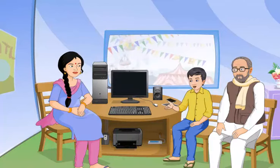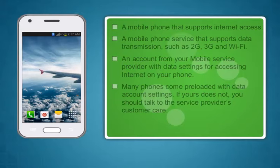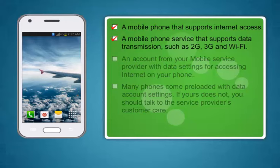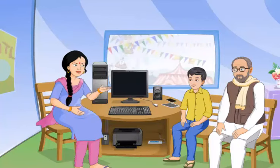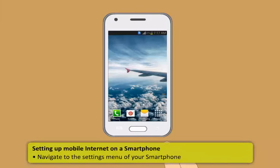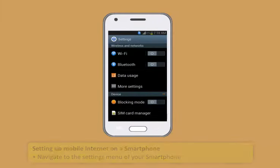You can also use the internet through your mobile phone. To access it, you need: a mobile phone that supports internet access, a mobile service that supports data transmission such as 2G, 3G, or Wi-Fi, and a data account from your service provider. To set up mobile internet on a smartphone: navigate to the Settings menu (via the settings icon in the apps menu or the notifications bar), then find Wireless and Networks settings.